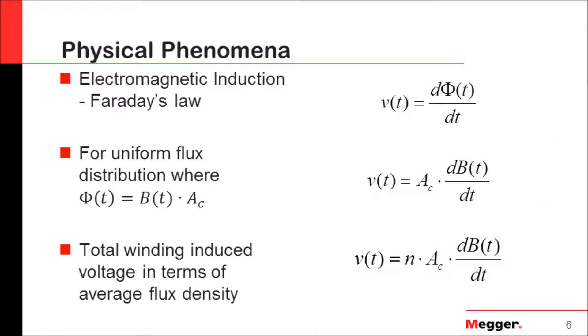When we're looking at the physical phenomena, we need to understand the laws that rule in this process. So the first one, the electromagnetic induction, is Faraday's law. What is it telling us? That basically, when we're applying this voltage, we have a change of rate of flux with respect to time. But if we have uniform flux, the distribution here will be related to the flux density and the cross section of the core, as you can see here. Now, we need to understand that it's not only one turn what we are applying, but it's several turns that we have in the coil. So basically, the relation that we have for the electromagnetic induction is as shown on the last equation here.